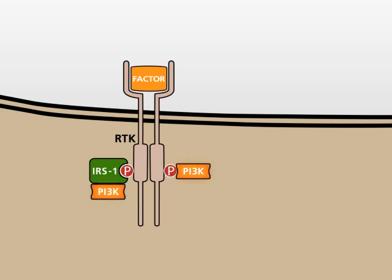A completely different mechanism of PI3 kinase activation begins with the small membrane-bound GTPase RAS. By binding to active GTP-bound RAS, PI3 kinase is activated.